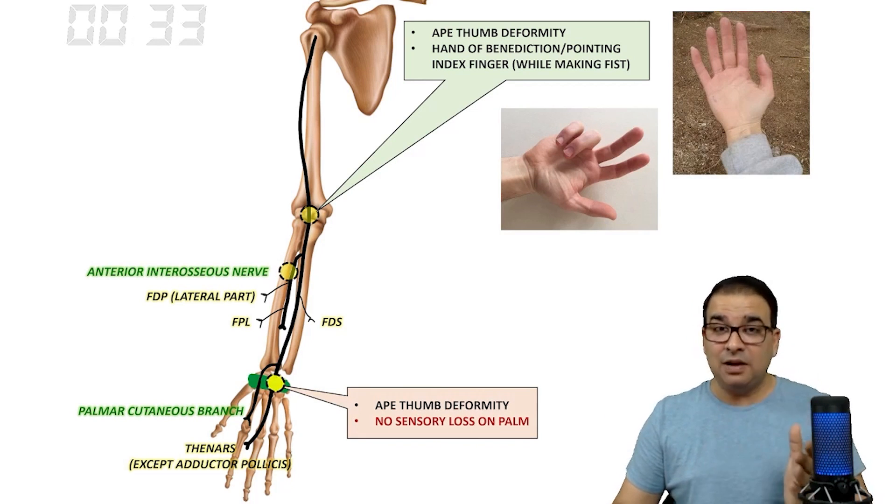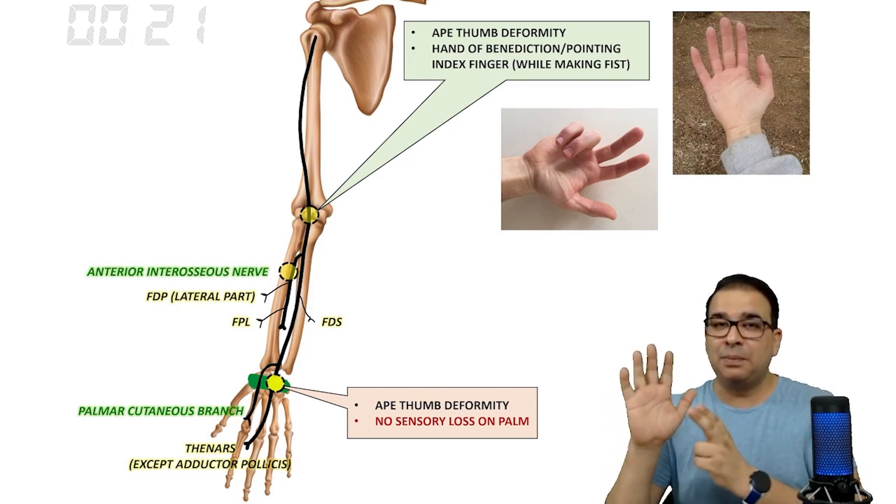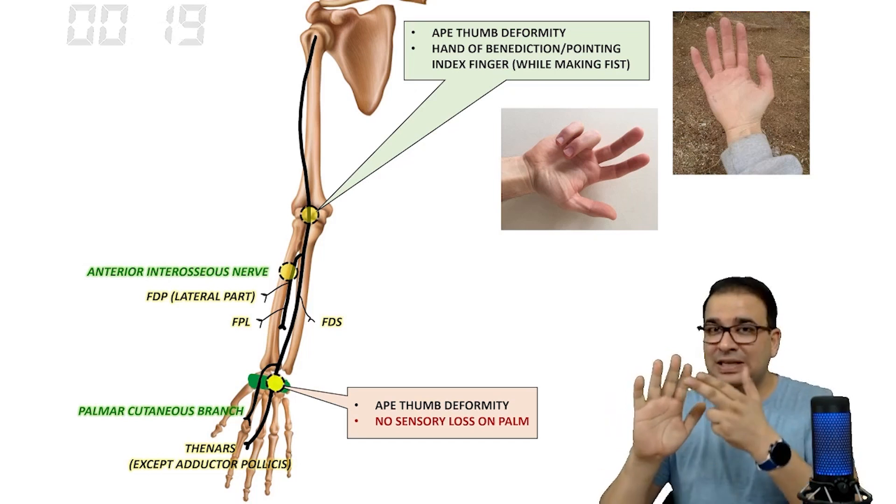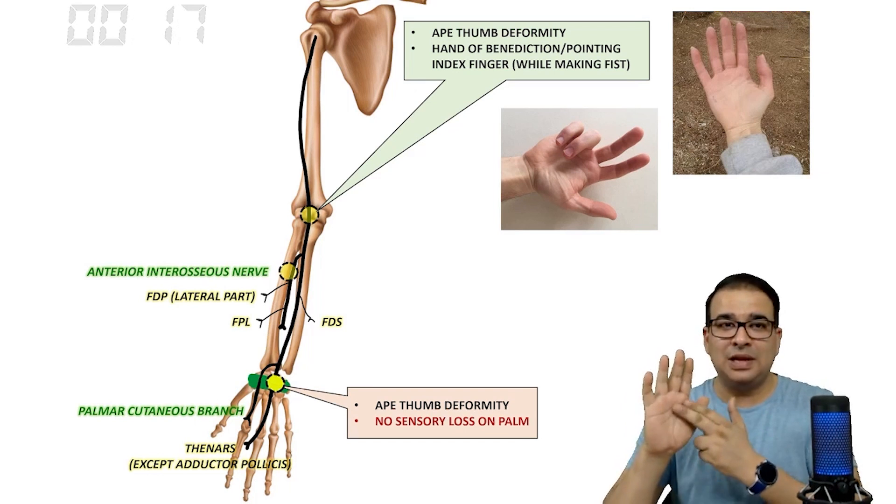If it is a distal injury, there will be ape thumb deformity. Obviously there will be no pointing index finger in this case, but the important thing is because palmar cutaneous branch is spared, there will be no sensory loss on the lateral three and a half of the palm. There will be sensory loss on the digits but no sensory loss on the palm.